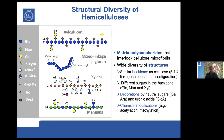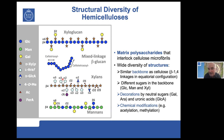Hemicelluloses have a similar backbone as cellulose — a backbone of beta-1,4 linkages — but differently from cellulose, we can find different sugars in the backbone: glucose, mannose, and xylose. We also find different decorations by neutral sugars like galactose or arabinose, but also acidic sugars like glucuronic acid, plus acetylation and different chemical modifications. All of this structural complexity has a functional role that we are very interested in deciphering.